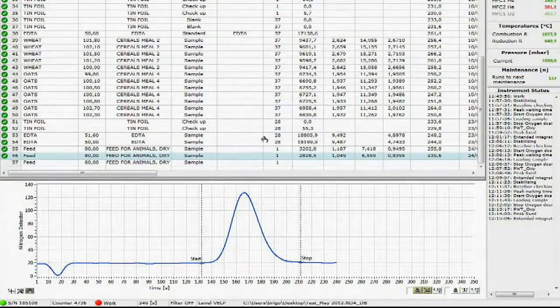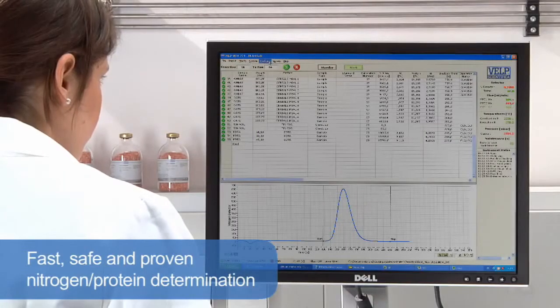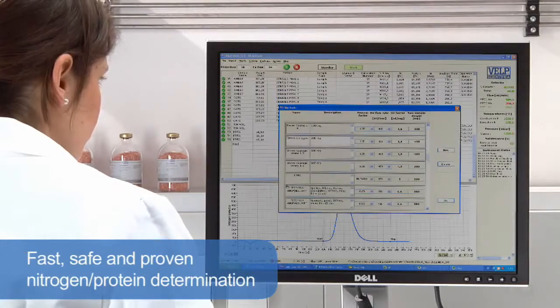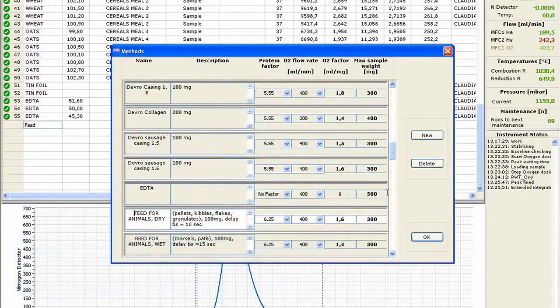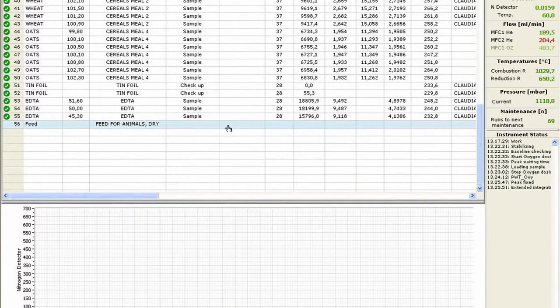The NDA701 has no requirement for hazardous chemicals, providing fast, safe, and proven nitrogen and protein determination. The fully automated NDA701 is entirely controlled via PC through the intuitive Dumasoft software.